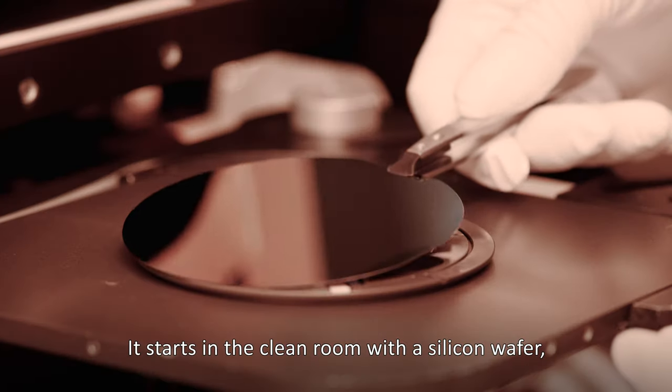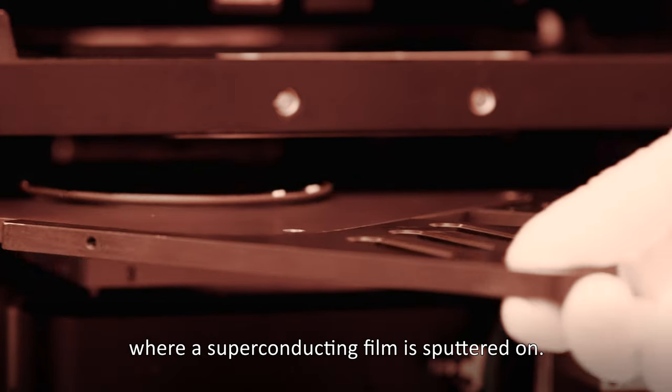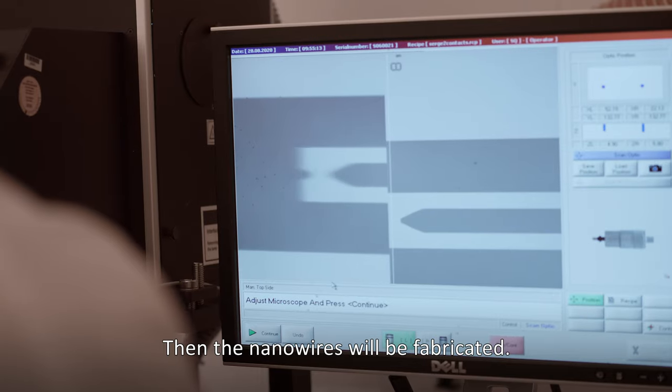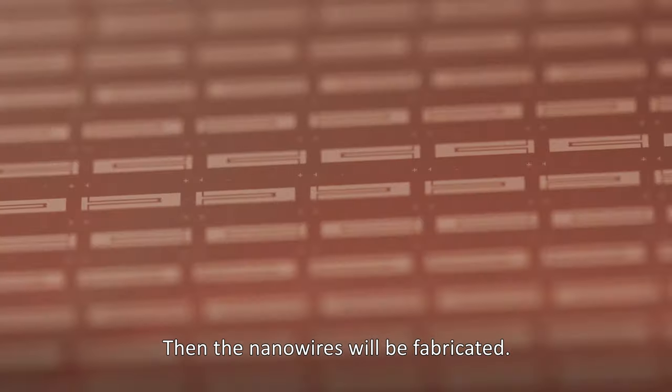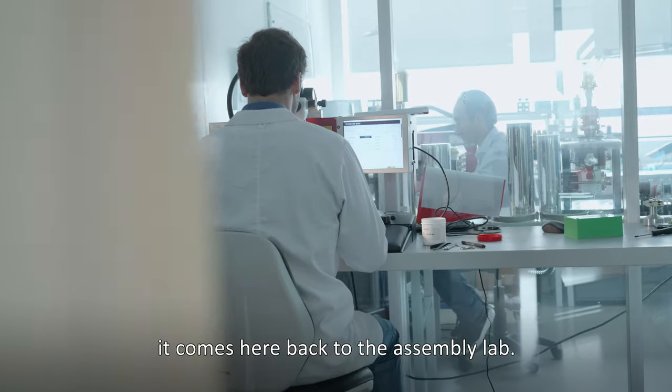You start in the clean room with a silicon wafer where a superconducting film is sputtered on. Then the nanowires will be fabricated. Once this process is completed it comes back to the assembly lab.